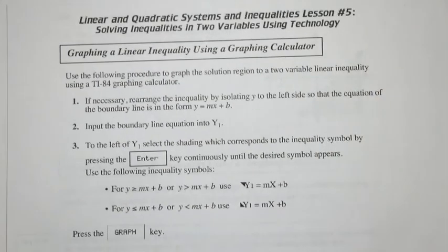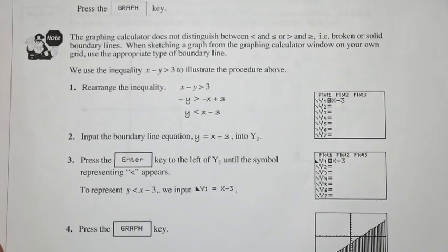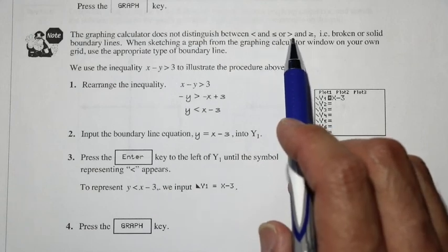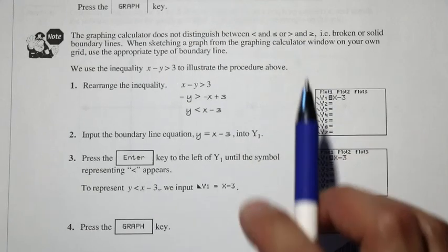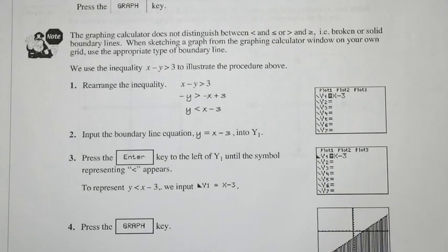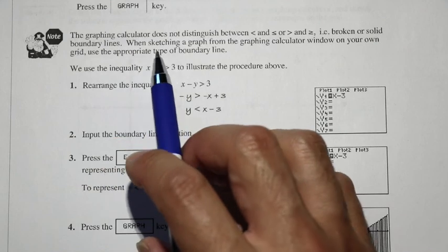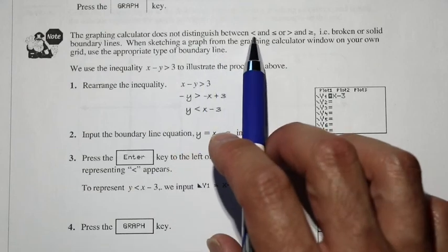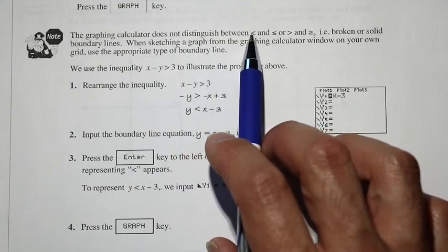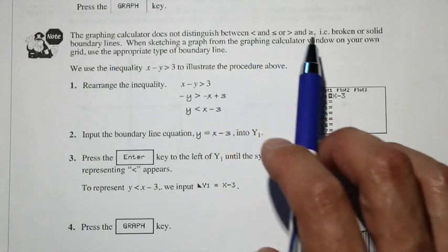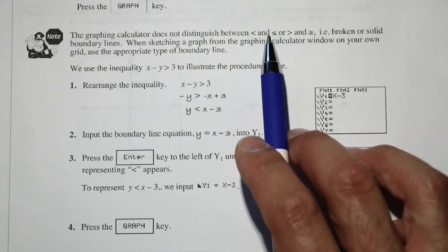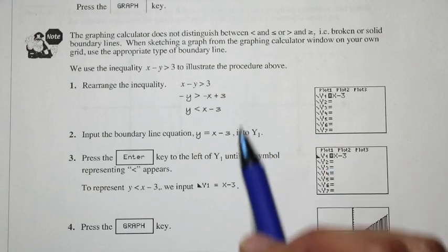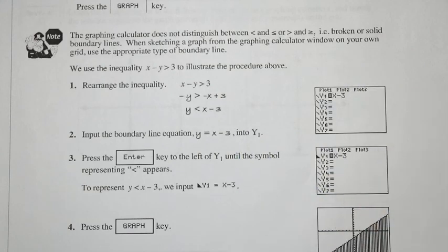One thing to keep in mind: the graphing calculator doesn't distinguish between just less than versus less than or equal to, or just greater than versus greater than or equal to. It doesn't make a broken or solid boundary line automatically. So if you're sketching from the graphing calculator onto paper, you need to check the equation — if it's just less than, draw a broken line; if it's less than or equal to, draw a solid line.